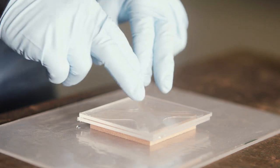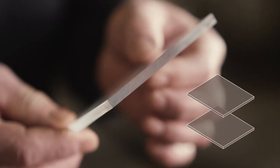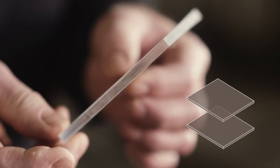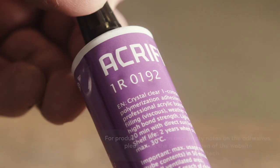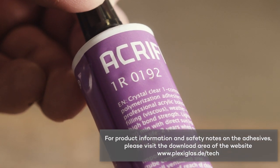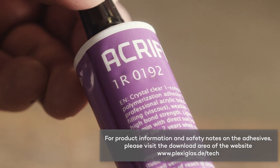However, it can only be used for transparent material. In this video, we show you how to glue together two Plexiglas sheets along their surfaces. For this, we use the polymerization adhesive Acryfix 1R0192.